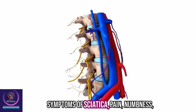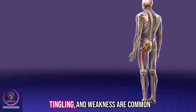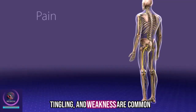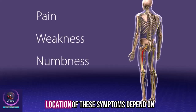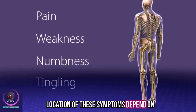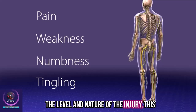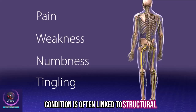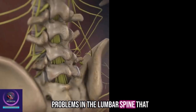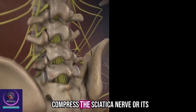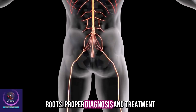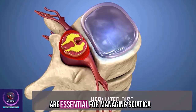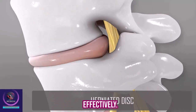Symptoms of sciatica include pain, numbness, tingling, and weakness. The severity and location of these symptoms depend on the level and nature of the injury. This condition is often linked to structural problems in the lumbar spine that compress the sciatic nerve or its roots. Proper diagnosis and treatment are essential for managing sciatica effectively.